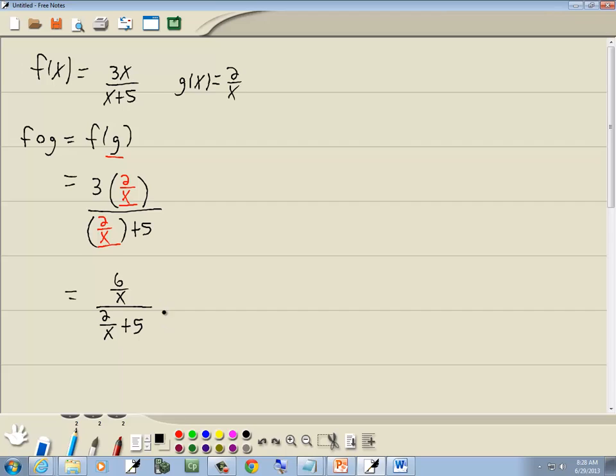This is a complex fraction, complex rational expression. The method that works 100% of the time to simplify these is to multiply everything by the LCM of all your inner denominators. Now inner denominators would be the inside fractions here. These would be your inner denominators. And this x down here would be also. So we're going to multiply everything by the LCM of all those. We've got x and x, so the LCM would be x.